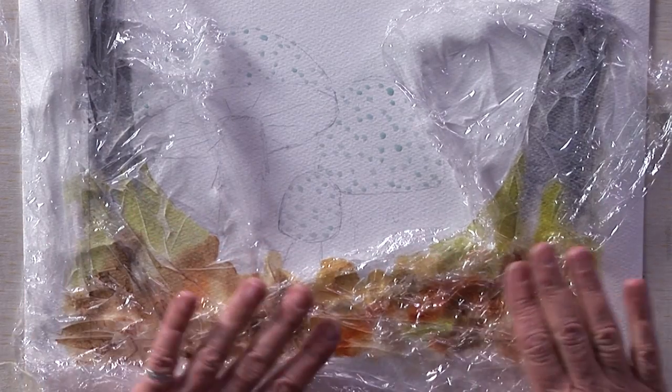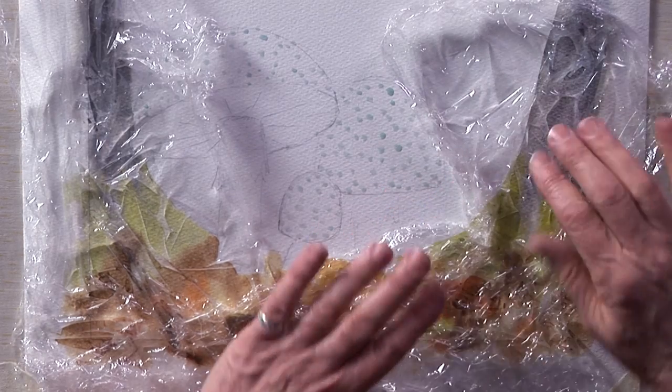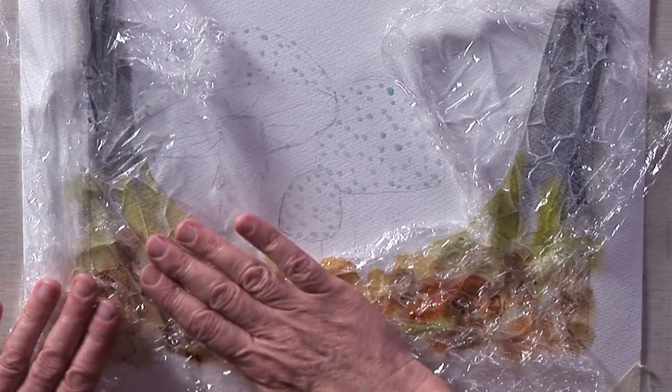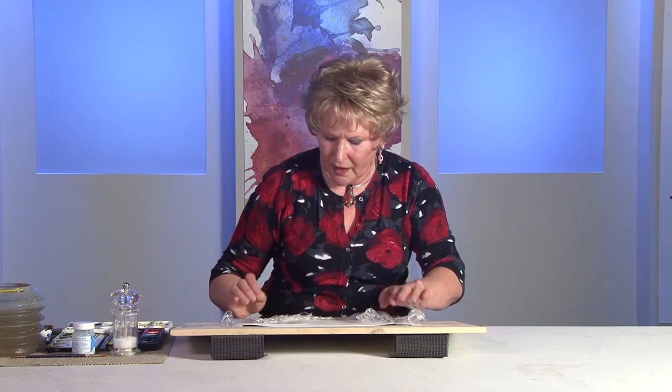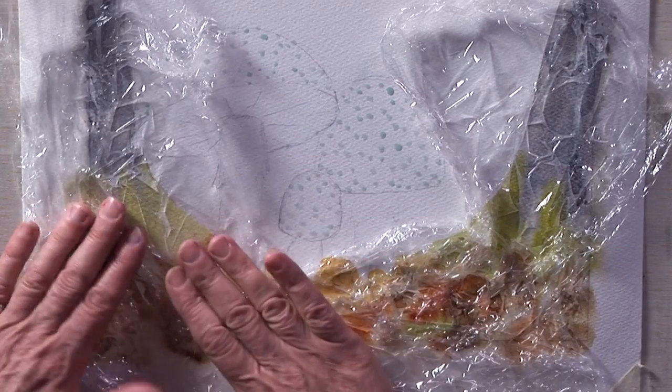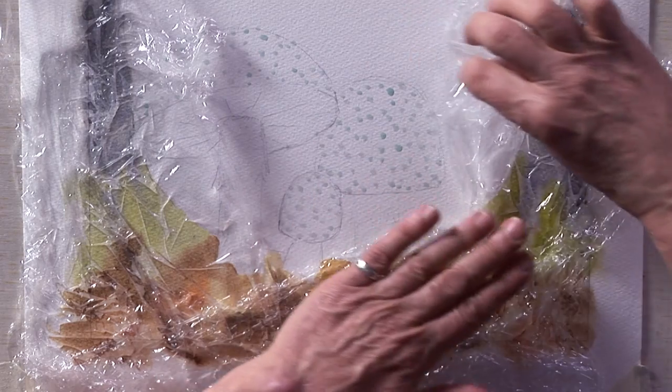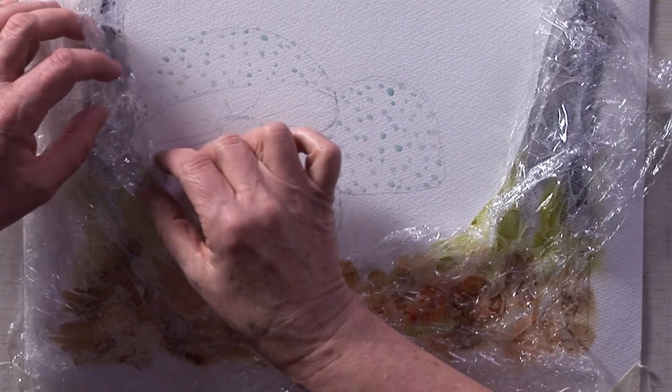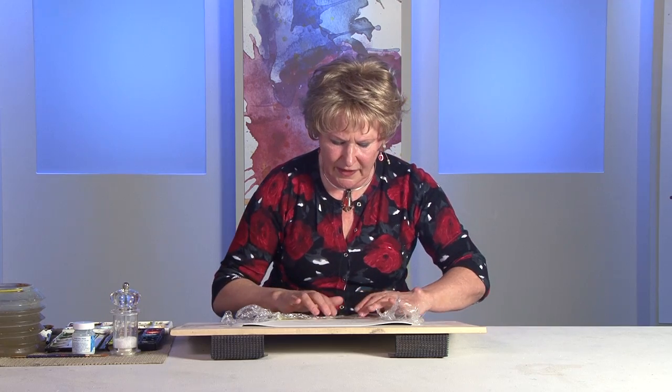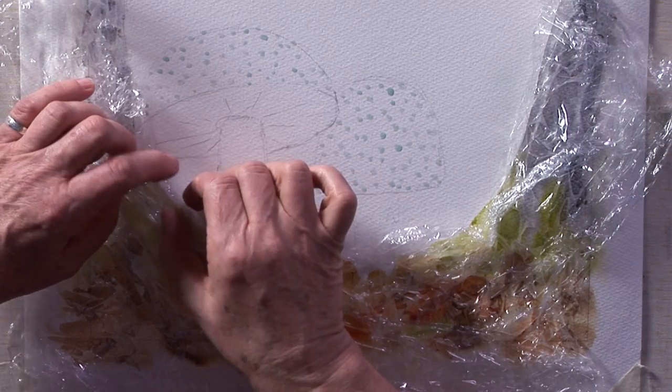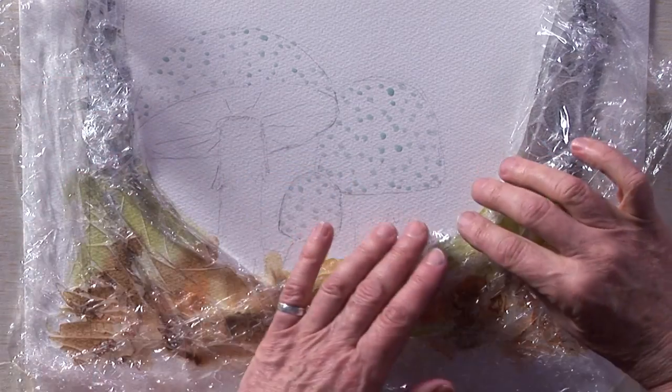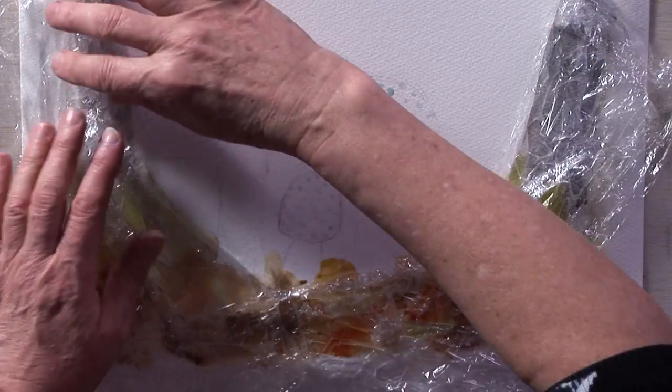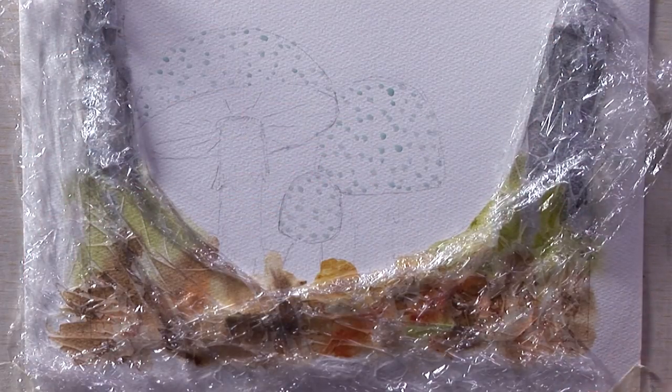Just once you've got it on there just tap it down very gently and you can start to see these patterns and shapes forming. It does need to dry but what we can do is peel it back at this stage and do the sky area so it can all dry at the same time. So I'm just going to keep this nice and firmly on here but just peel it back around the edges so it can start to go.